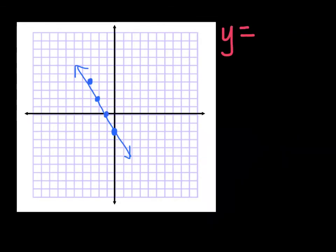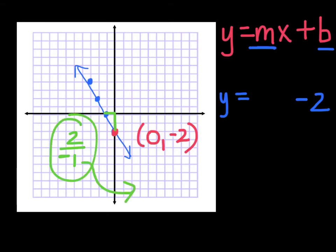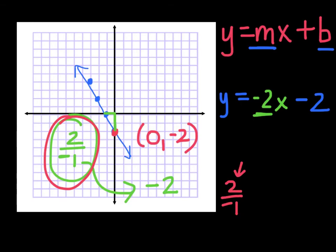Let's try another one. Again, it's a line so it's written in the form y equals mx plus b. I come to the graph to find the y-intercept, which looks like the coordinates are (0, negative 2), so I write minus 2 at the end. Now I need to find the slope: I count up 2 and then back 1, so the slope is 2 over negative 1. Since 2 divided by negative 1 equals negative 2, I can rewrite that slope as just negative 2. So the equation for that line is y equals negative 2x minus 2.